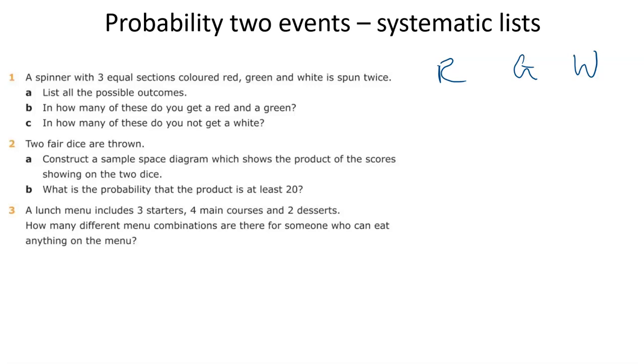Wherever the spinner lands the first time isn't going to affect the second one. So it could be red with red, red with green, red with white, green with red, green with green, green with white, or white with red, white with green, white with white.